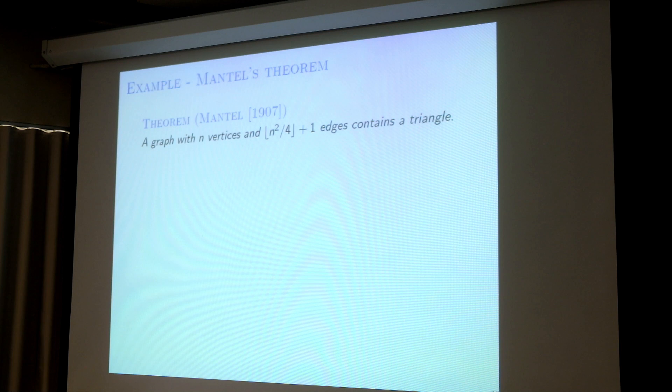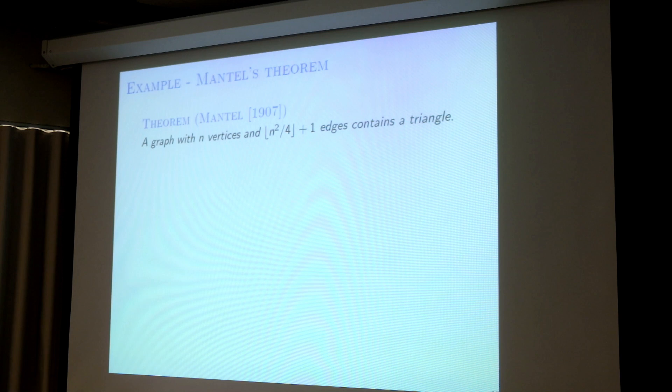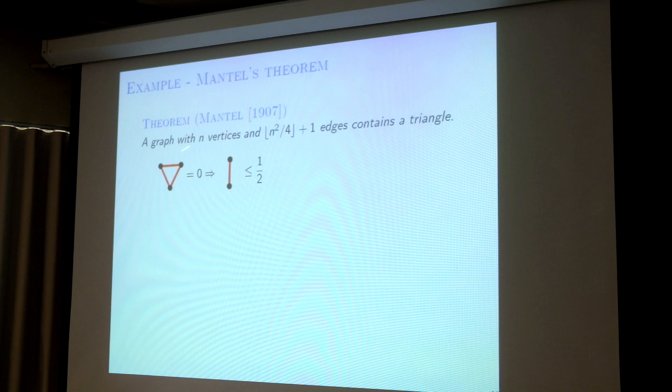To give you some idea of how I use this, I will show a proof using flag algebras of Mantel's theorem. It may be the most complicated proof of Mantel's theorem you'll see. Mantel's theorem says that if I have n²/4 + 1 edges, it contains a triangle. In the red-blue edge-colored language: if red triangle density is zero, then red edge density is less than or equal to one-half. You can think of red edges as edges and blue edges as non-edges. Then this says if you have no triangle, edge density is at most one-half. This is exactly Mantel's theorem in the limit sense.